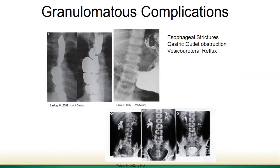As for granulomatous complications — the picture on the right is an example of gastric outlet obstruction, where the stomach's dye should be emptying into the intestine but isn't, because the outlet is blocked by a granuloma. There are also granulomas that can form in the esophagus, causing strictures. A picture of the kidneys and bladder shows the kidneys getting backed up and swollen — like a plumbing blockage — because of granulomas that have formed in the bladder.